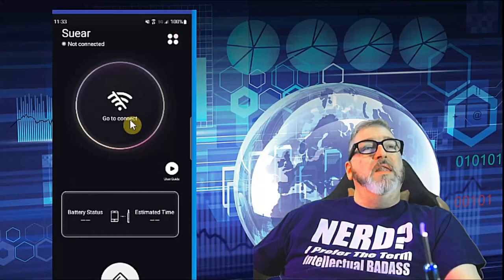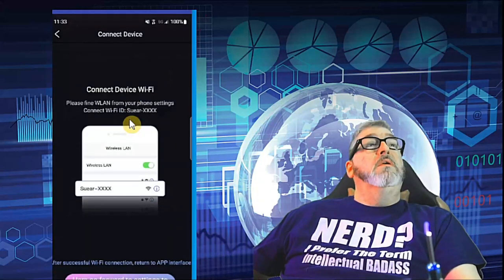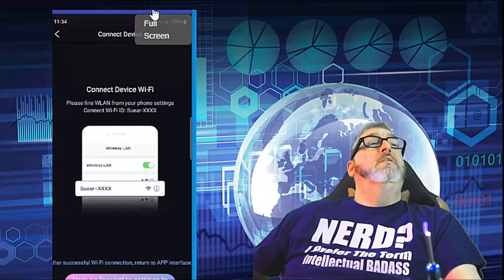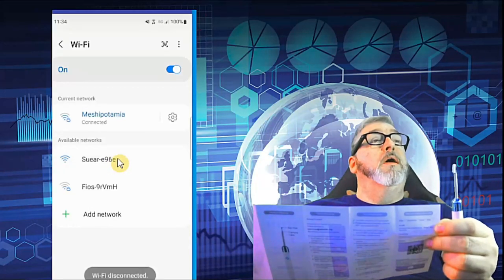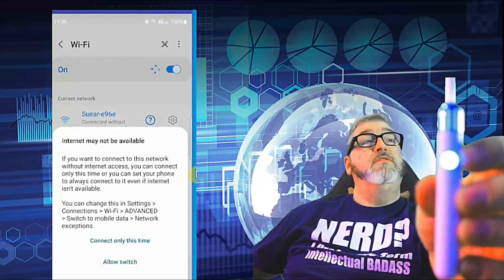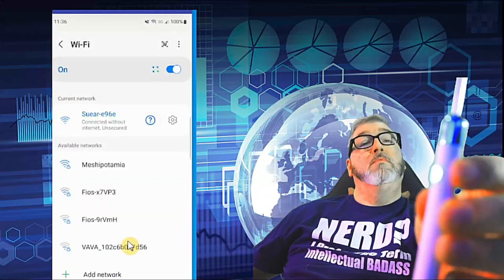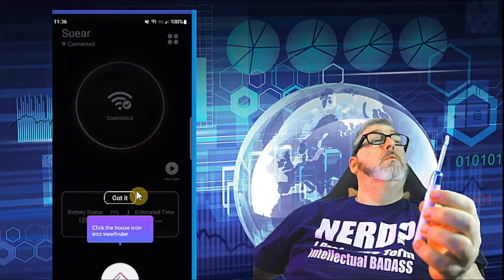And let's just click the go to connect icon and follow the pop-up prompt and click to connect. Now we go to the WiFi of the phone and we look for the Sue Ear network. Okay, and the blue light has stopped flashing and I think we're connected.